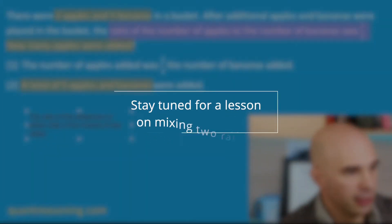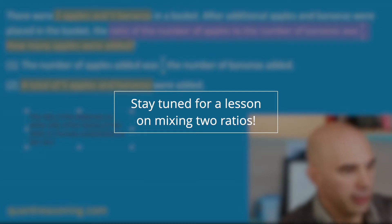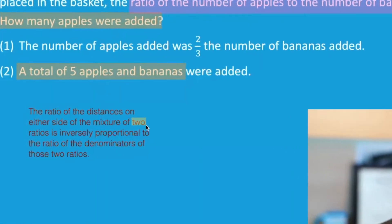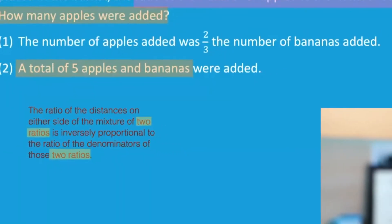The ratio of the distances on either side of the mixture of two ratios is inversely proportional to the ratio of the denominators. When we talk about these two ratios, that's the same two ratios. That's the concept that we used in order to determine that statement one has to be sufficient on its own.